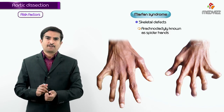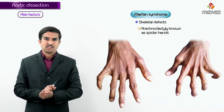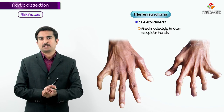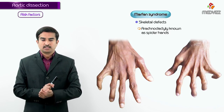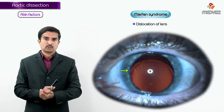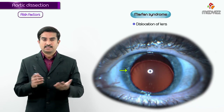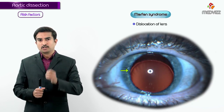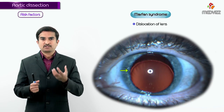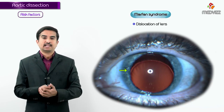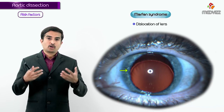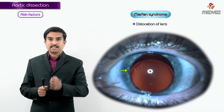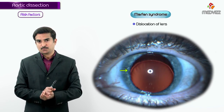In Marfan syndrome, due to the defect in elastic fiber synthesis, dislocation of the lens is another important finding. The suspensory ligaments holding the lens are compromised because they are mainly composed of elastic tissue.